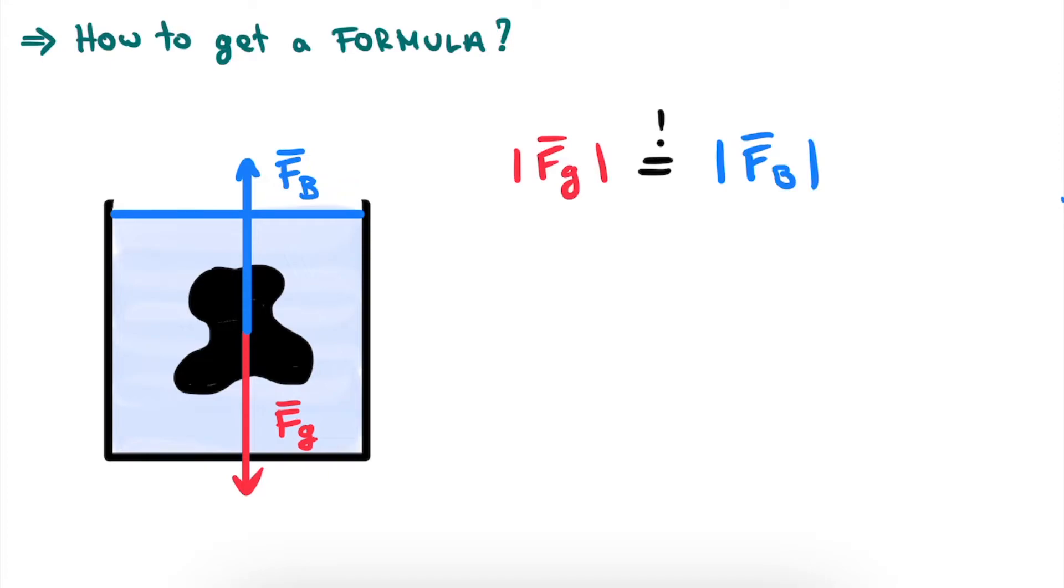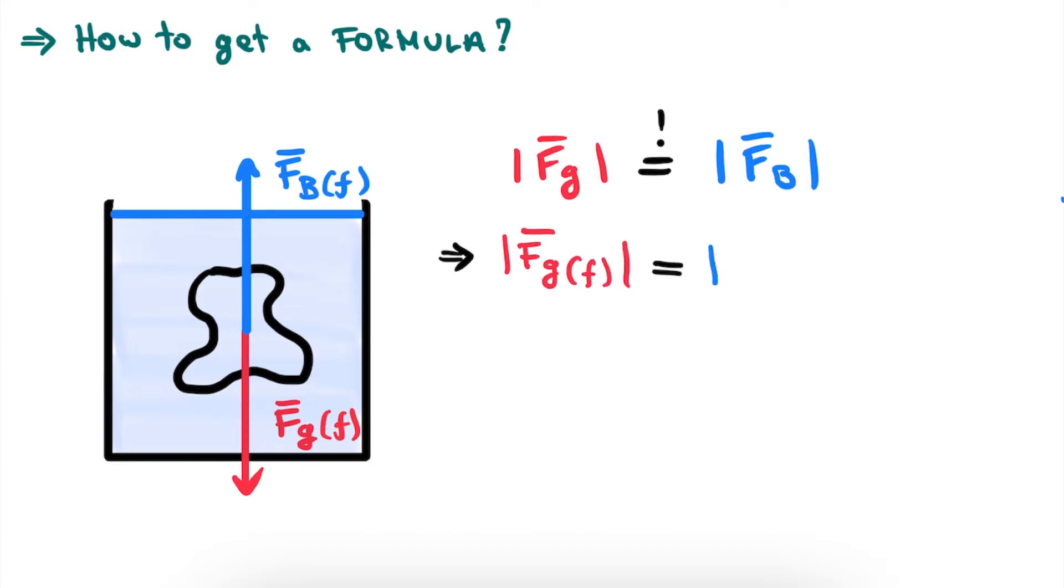After some thinking, we intuitively realize that this will occur only if the object has the same density as the surrounding fluid. Therefore, if we only keep the contours of our object but replace the material with the surrounding fluid, the force of gravity and buoyancy will be equal in magnitude but opposite in direction. Note that I subscript the specific forces with a small f just to denote that we are considering the fluid object at this point, which is the object with the same contours or volume as the previous object but now made up of the surrounding fluid.